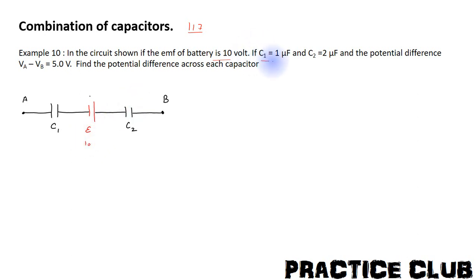And if capacitor C1 is 1µF and C2 is 2µF and the potential difference VA minus VB is 5V, so this point and this point of potential difference is 5V. Find the potential difference across each capacitor.